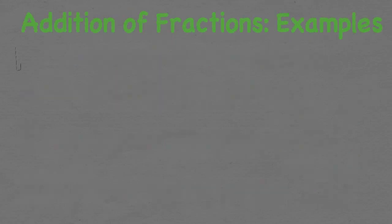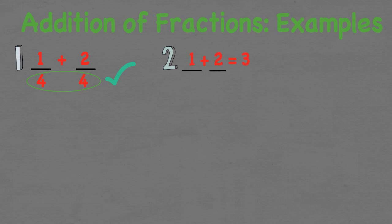For example, if we have one over four plus two over four, we go through the three steps: make sure the fractions are alike, add the numerators together but not the denominators, and simplify if possible. The denominators are the same, so the fraction is alike. Adding the numerators gives us three over four. This fraction can't be simplified, so the final answer is three over four.